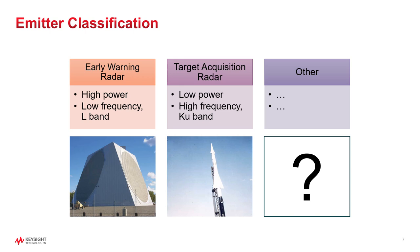The radar analyst is going to need to classify what kind of radar emitter they are looking at based on various clues from the signal — power level, frequency, pulse repetition interval, modulation type, etc. As the radars are getting smarter, they may very well find a signal for which they do not have any experience or measurement history. So how do we handle these situations?